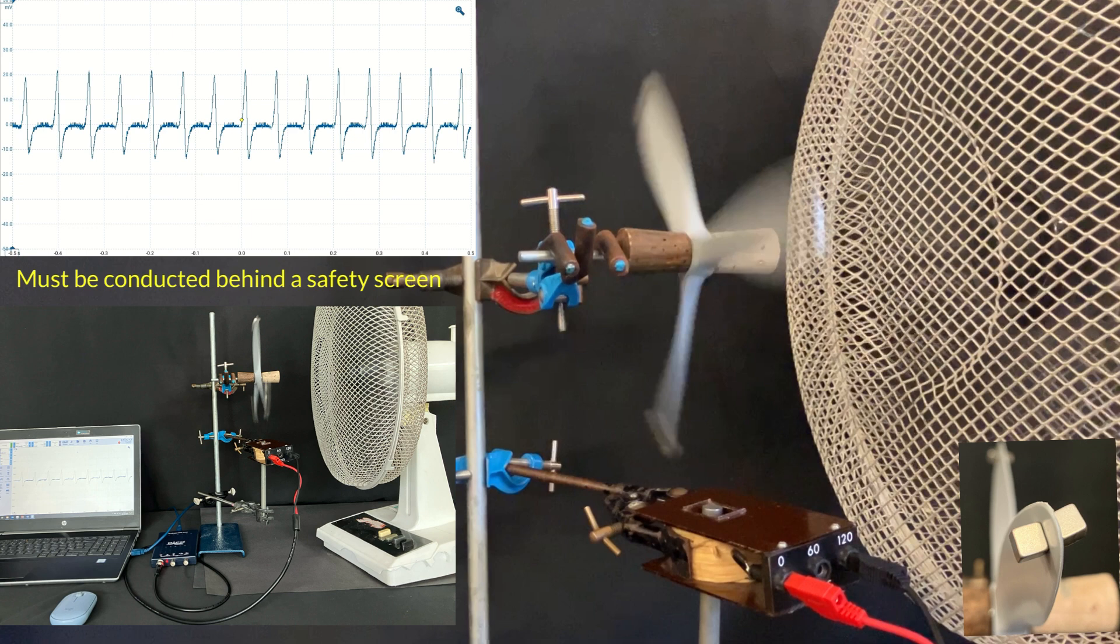...each with a magnet on them, that means that there have been 15 times a third of a rotation of the turbine in one second.